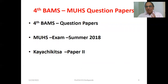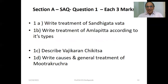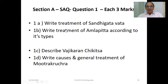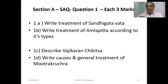MUHS question paper, Summer 2018, Kaya Chikitsa, Paper 2. Write treatment of Sandhigatvata — osteoarthritis. Snehana and Svedana is the best treatment. Lakshadi Guggulu will be there, Ashwagandha Vati will be there. Write treatment of Amlapitta according to its type: Urdhaga Amlapitta and Adhoga Amlapitta, Samavastha and Niramavastha. Suta Shekhar is for Sama Amlapitta and Pravalpishti Vati is for Nirama Amlapitta — don't forget this.